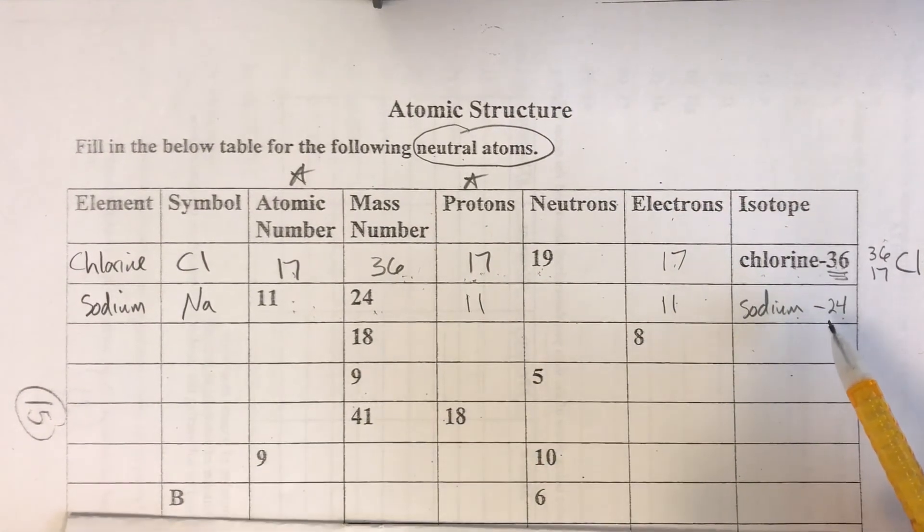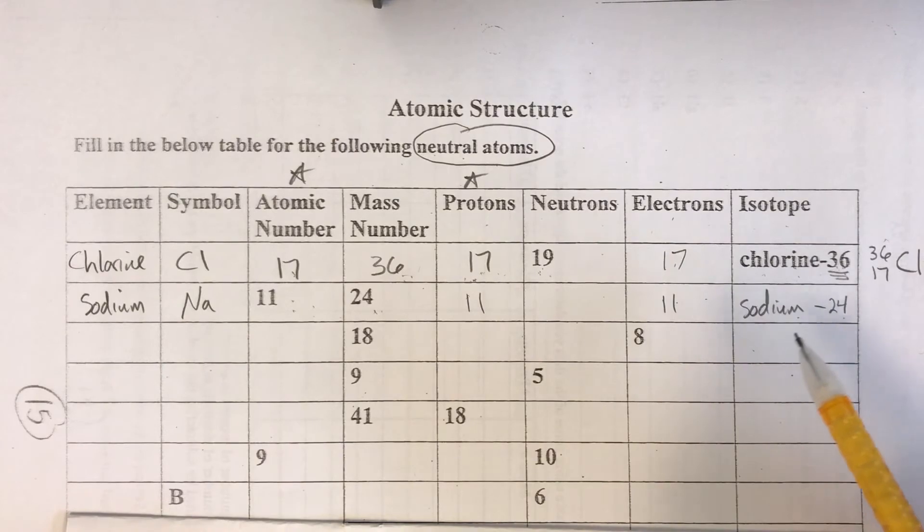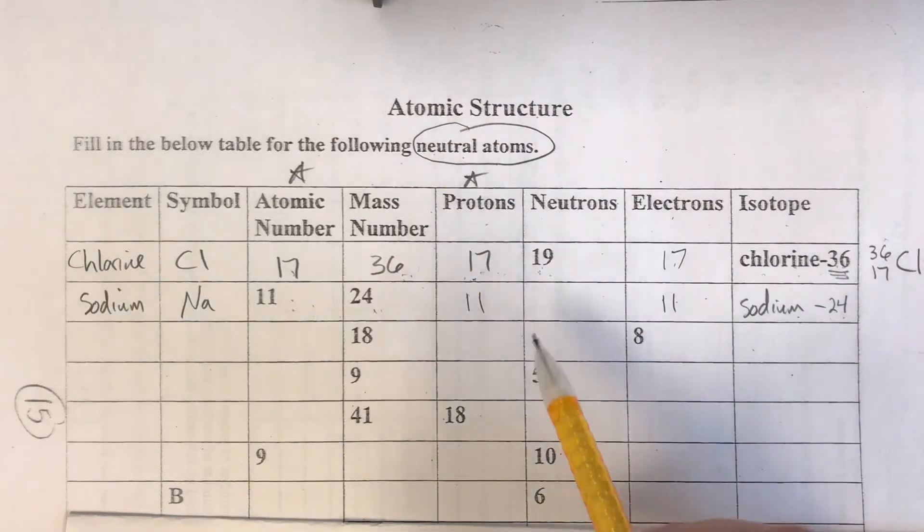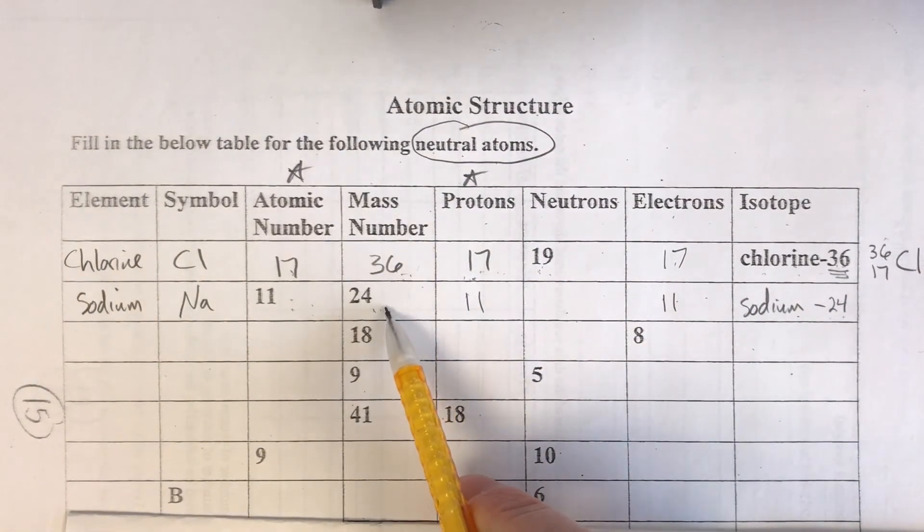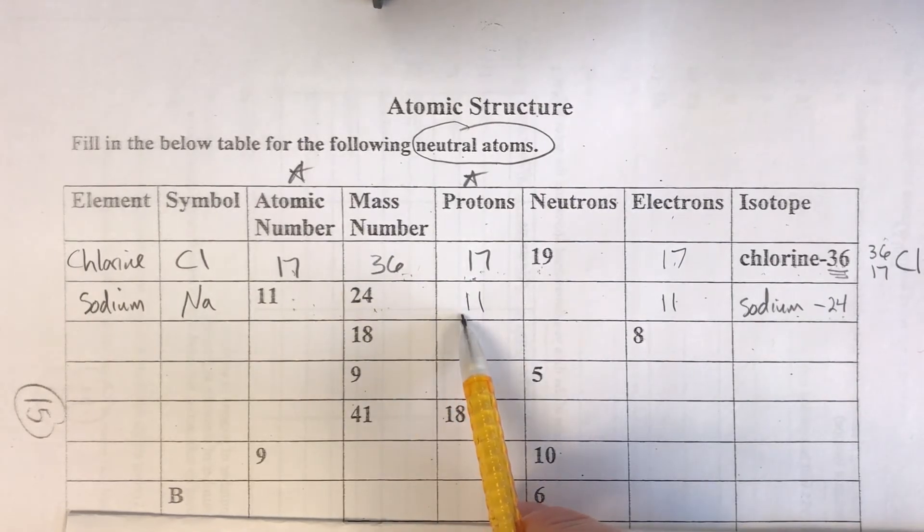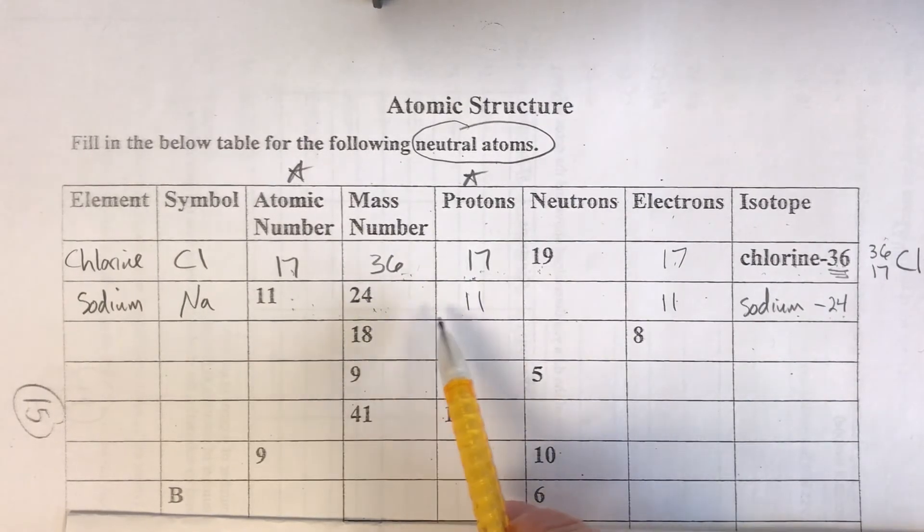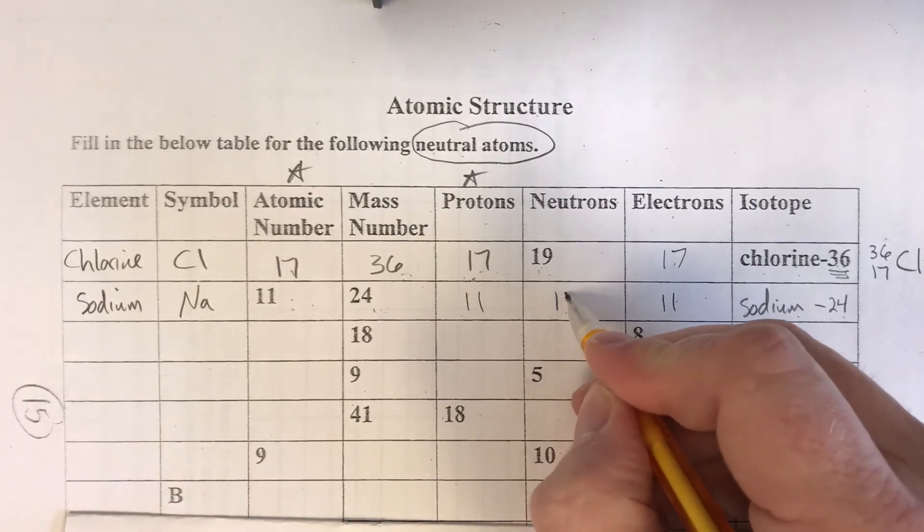Again they're isotopes of the same element. It just means they have different numbers of neutrons. So how do we figure out the number of neutrons in this case? All I have to do is take my mass number and my proton and I can just subtract. So 24 minus 11 is going to be 13.